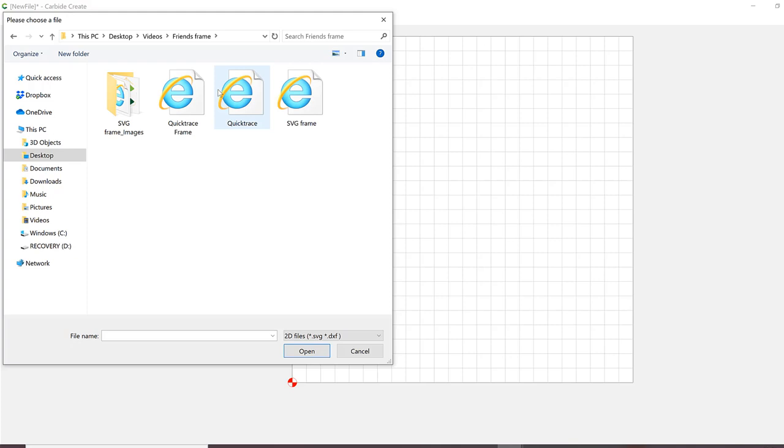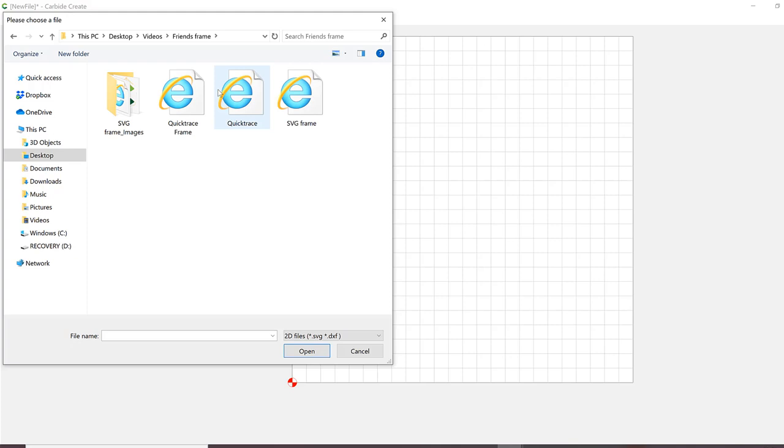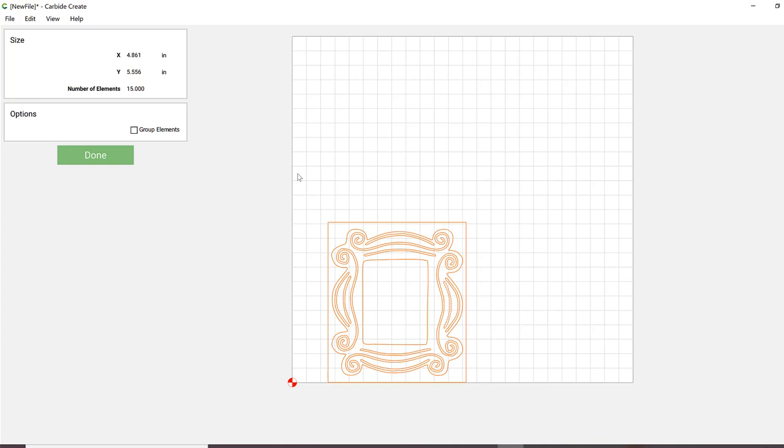Import the SVG that you previously created. When using the quick trace feature, it will automatically create a border around the image itself, so that's what you see me deleting here. Make sure to group your image items together that way you won't lose any pieces while you're scaling or moving the image around.